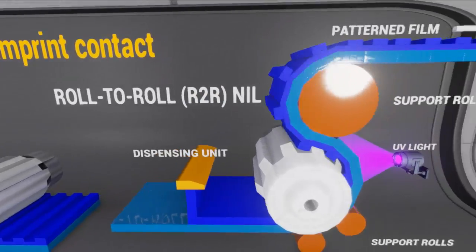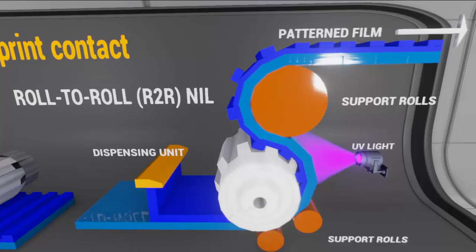As for the roll-to-roll NIL process, an imprinting roller with a patterned surface or wrapped with a flexible mold is used to imprint onto a flexible substrate on a supporting roller. The entire process is based on the roll-to-roll manufacturing concept, which has the advantage of continuous process and high throughput, and hence provides a highly promising solution for industrial-scale applications.